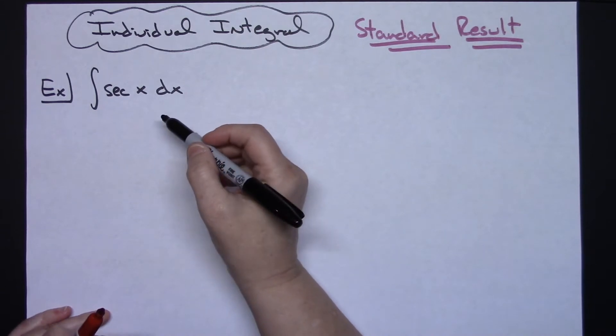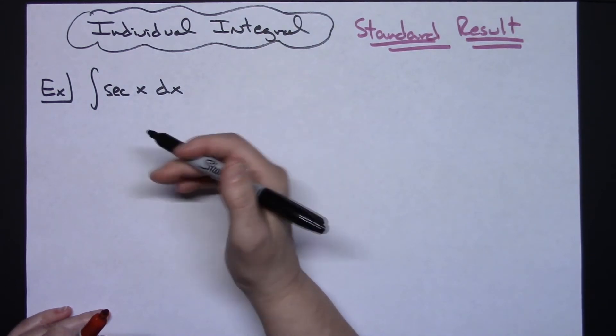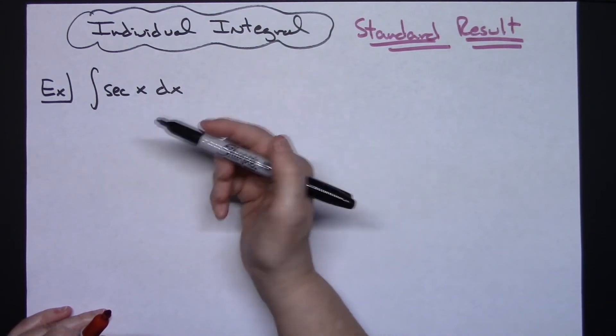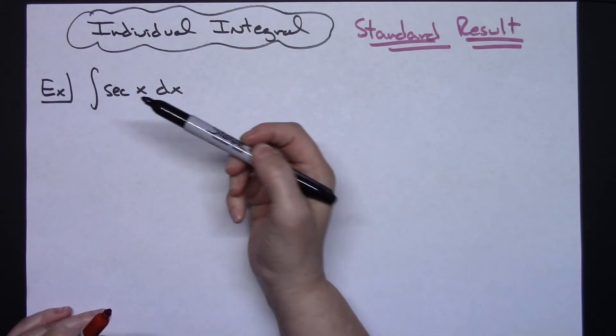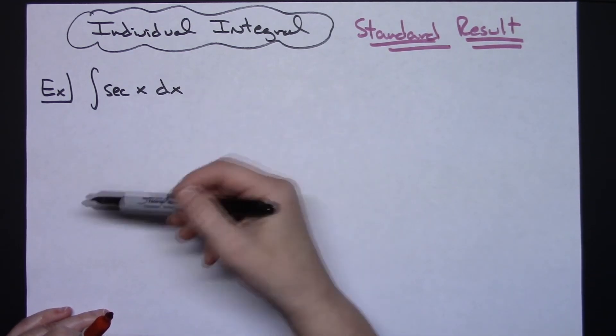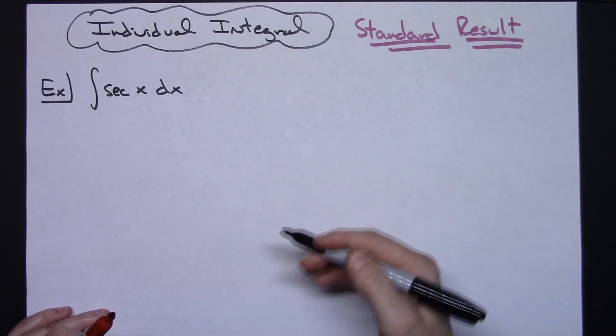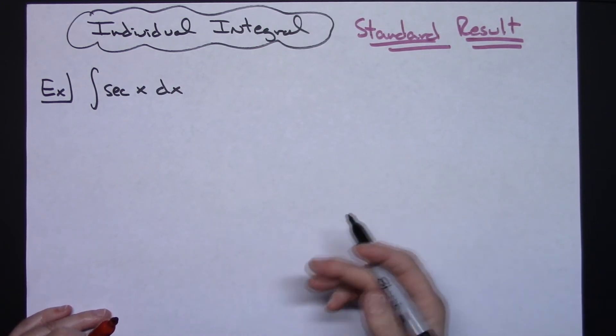It is an integral that a lot of people will memorize the answer to because it is pretty frequent. You use it a lot. However, if you know a trick that will get you the integration relatively quickly with a nice little u substitution, then it doesn't have to be memorized.